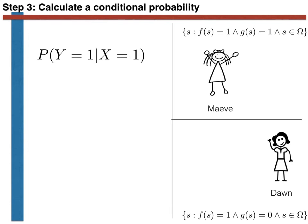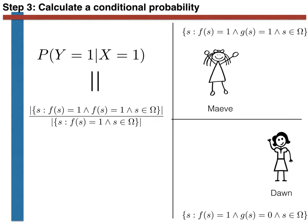We define two random variables. Capital X tells us whether or not the person is female: X equals 1 means the person is female, X equals 0 means the person is male. Capital Y equals 1 if the name begins with M, and Y equals 0 otherwise. The notation P(Y=1 | X=1) reads as the probability that Y equals 1 (name begins with M) given that X equals 1 (the person is female). We calculate this using the classical interpretation as the cardinality of the set of all females whose names start with M, divided by the cardinality of the set of all females. These cardinalities are 1 and 2 respectively, and we thus arrive at a conditional probability of one half.